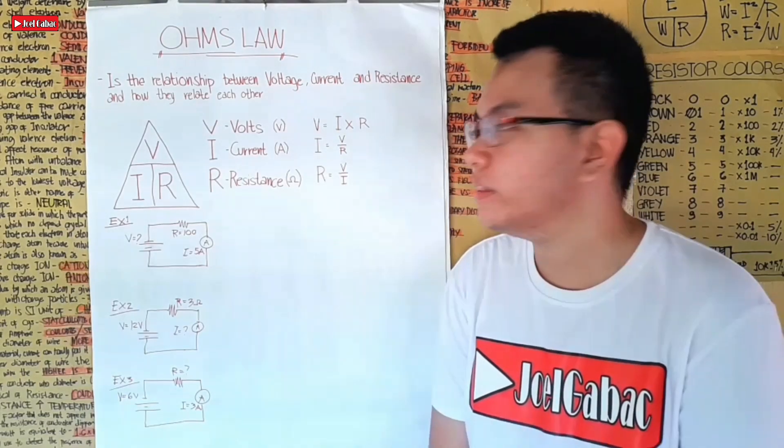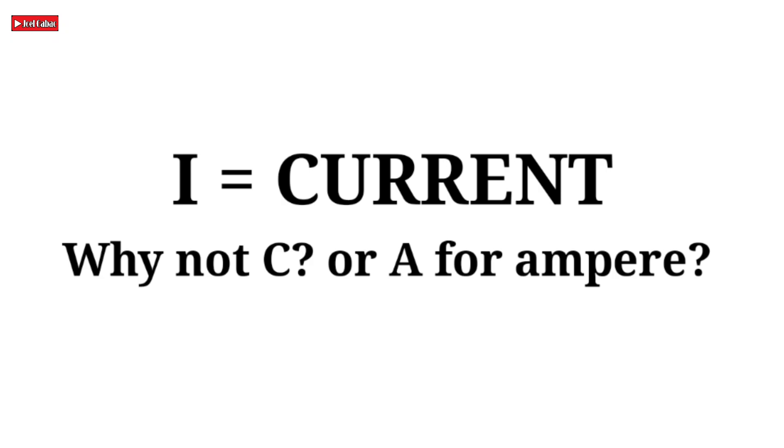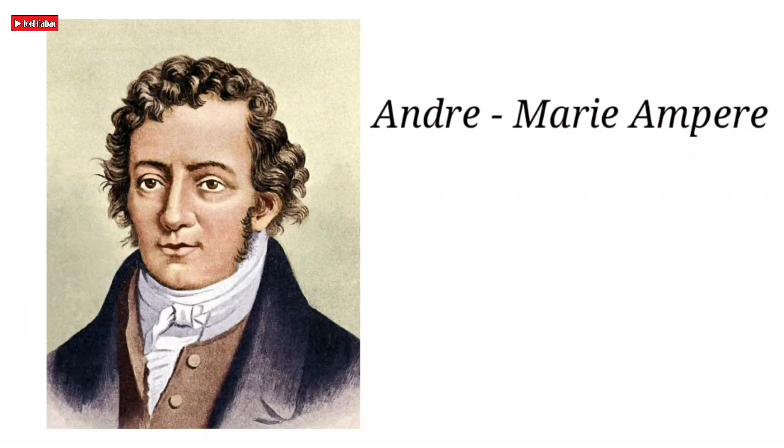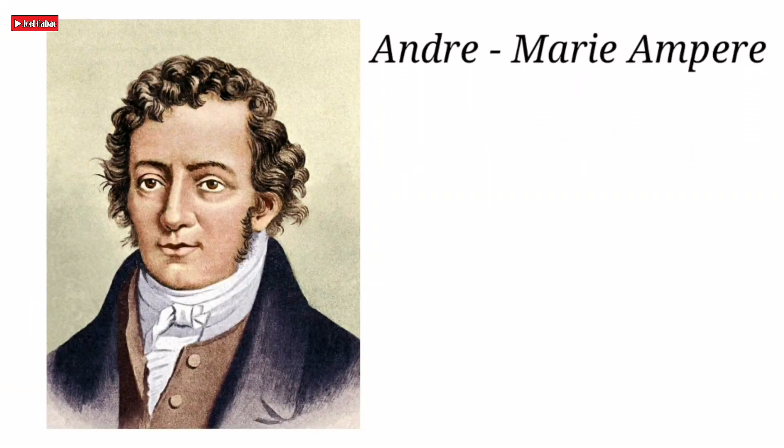If you're wondering why it's 'I' for current and not 'C' or 'A' for ampere, the unit of current is ampere. This is named after André-Marie Ampère, a French physicist. In the early days, he undertook many experiments involving varying amounts of electrical current.